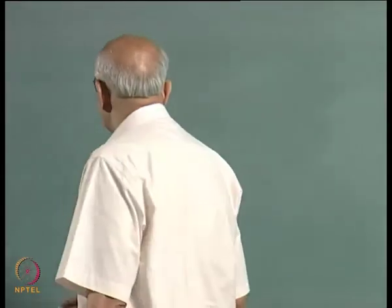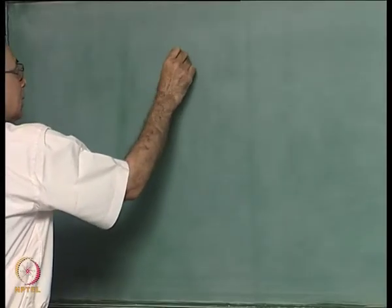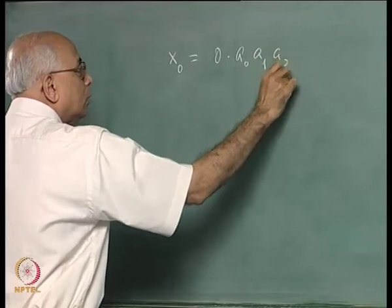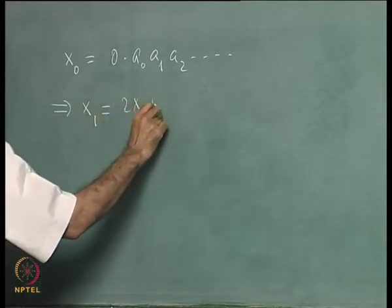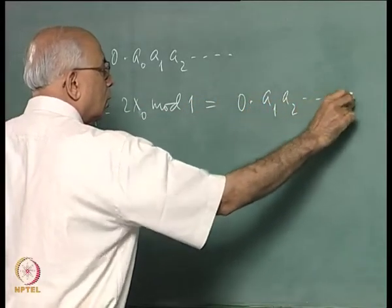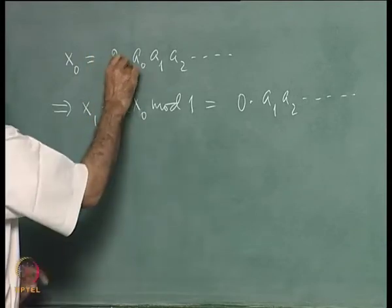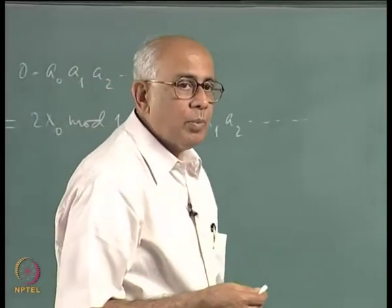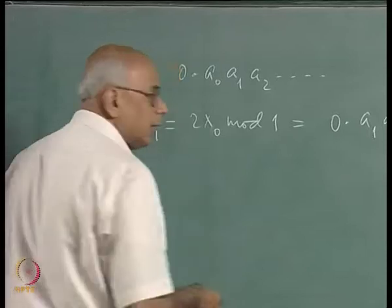The Bernoulli shift is our prototypical model for deterministic chaos. It involves taking an initial condition and writing it in binary as 0.a0 a1 a2 etc., which implies x1 = 2x0 mod 1, becoming 0.a1 a2 and so on. Each iteration shifts the decimal point one place to the right and discards whatever is to the left. This was the Bernoulli shift — chaotic with a Lyapunov exponent equal to the natural log of 2, which is positive.